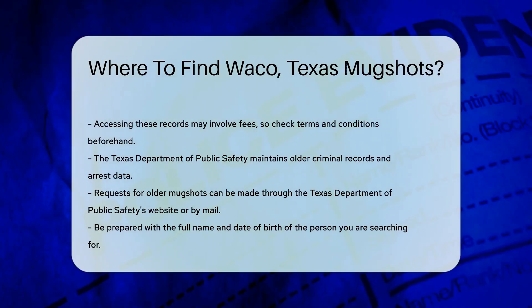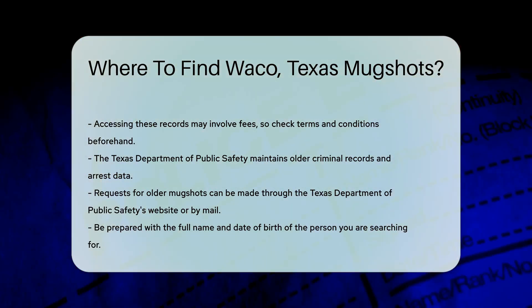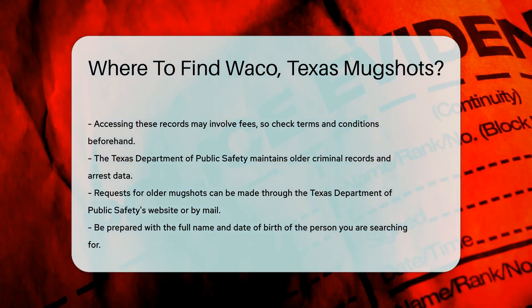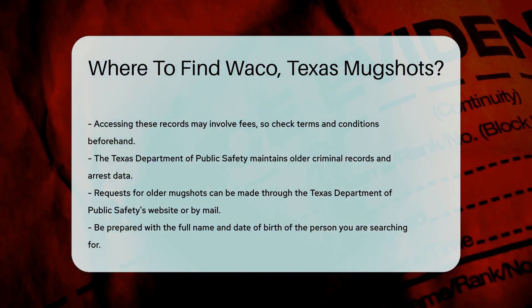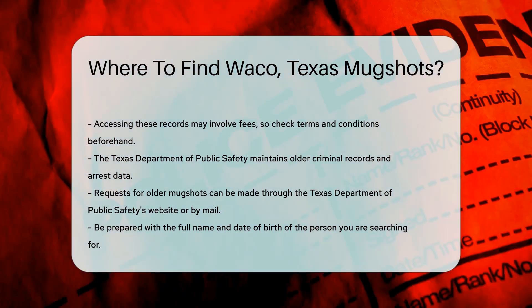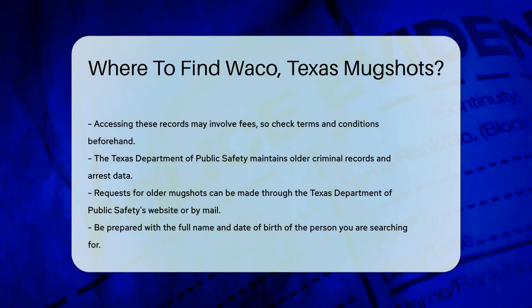If you need older mugshots, the Texas Department of Public Safety is another resource. They maintain criminal records and arrest data. You can request this information through their website or by mail.